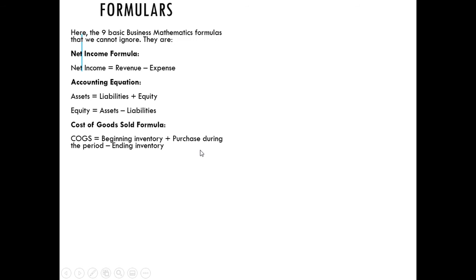Now, cost of goods sold — what is the formula? Other books refer to it as cost of sales. The cost of goods sold equals beginning inventory (opening stock) plus purchases during the period, minus ending inventory (closing stock). This is the formula that guides us in determining cost of goods sold.